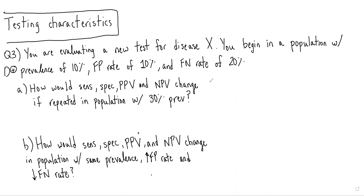In this case, you are evaluating a new test for disease X. You begin in a population with a disease prevalence of 10%, a false positive rate of 10%, and a false negative rate of 20%. Part A of the question is asking how would sensitivity, specificity, PPV, and NPV change if repeated in a population with 30% prevalence?